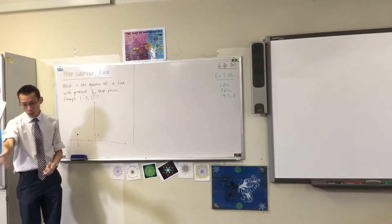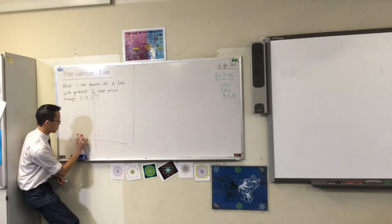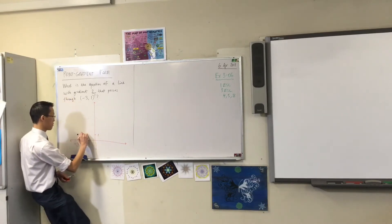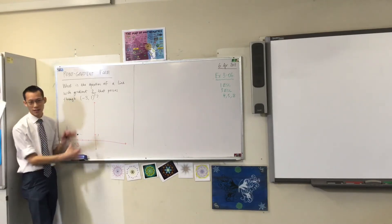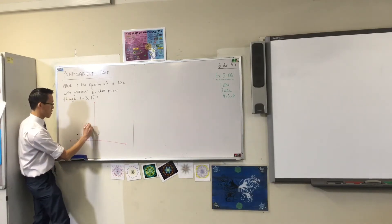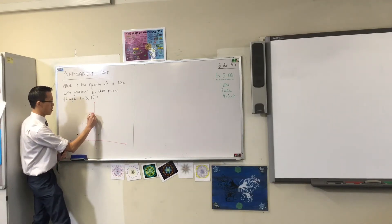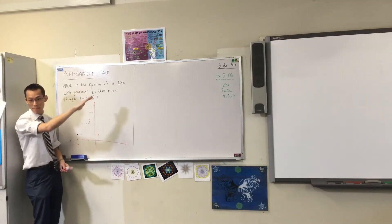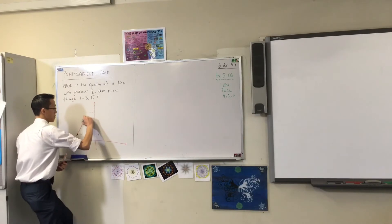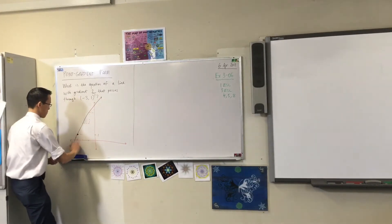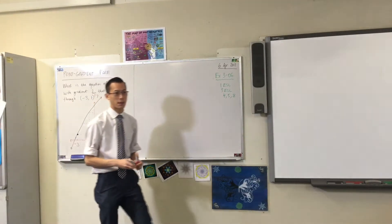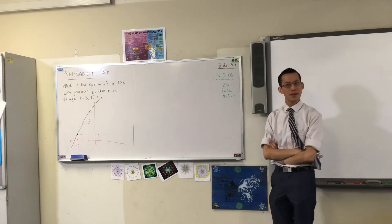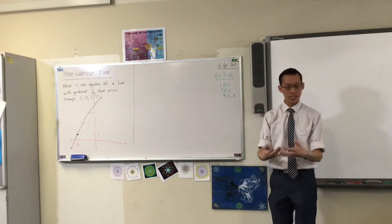On your grid paper you can do this accurately: go across one — there's your run — and then rise two. I'll keep going: across one, up two, across one, up two. If you look at what you've created, this stepladder picture, you can join up the dots, and that shows you what you should be expecting for your line. Now we have a picture in our minds and on our page for what we ought to get.